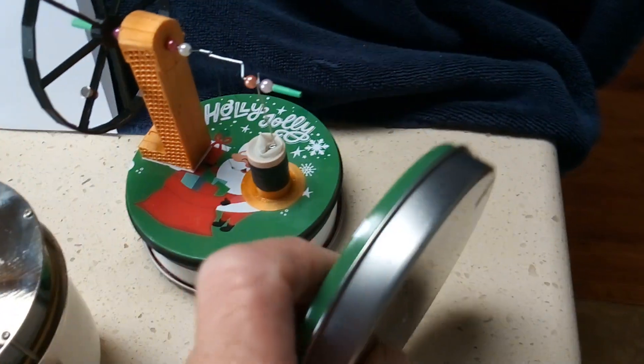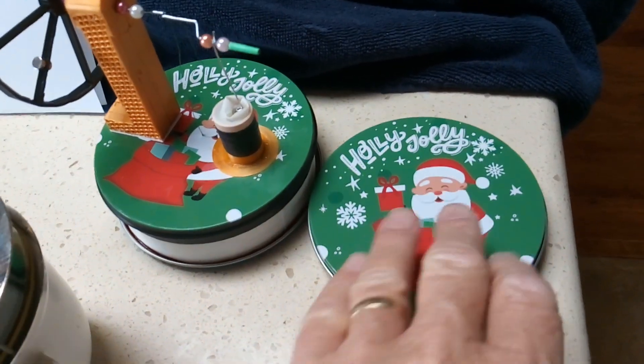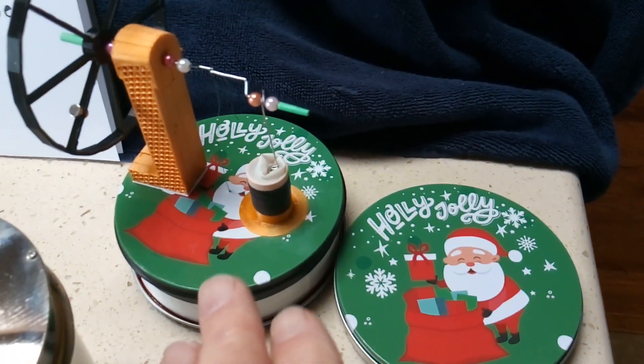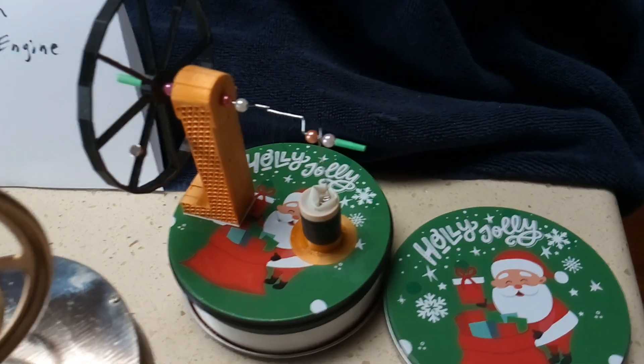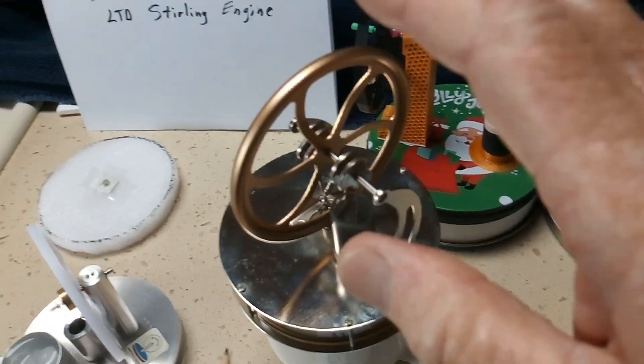Made the thing out of two lids off these cookie tins and then printed up a PLA spacer and then the foam displacer. This is what I was really going for - this is a real good LTD Sterling.